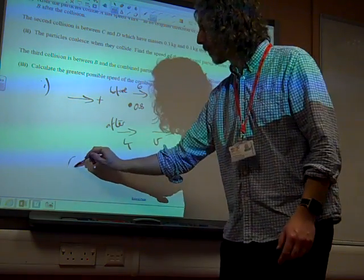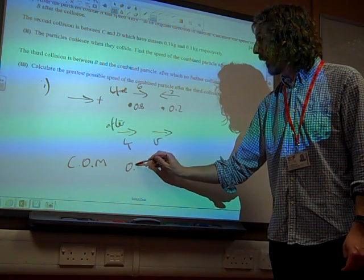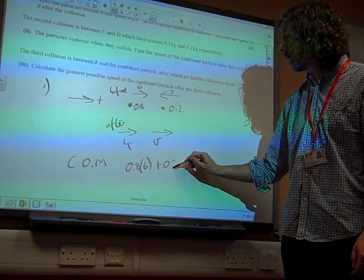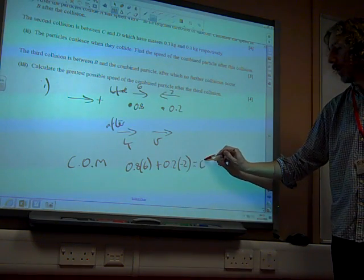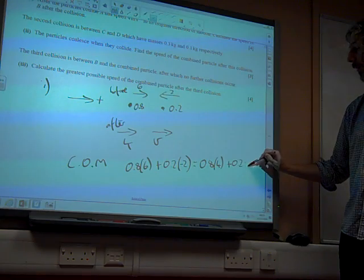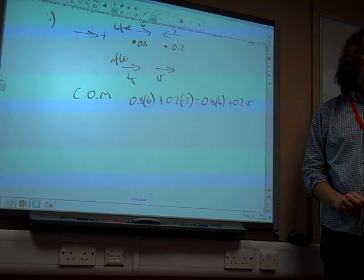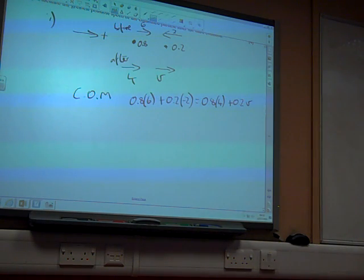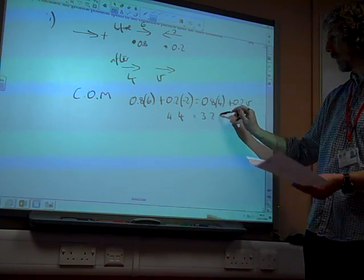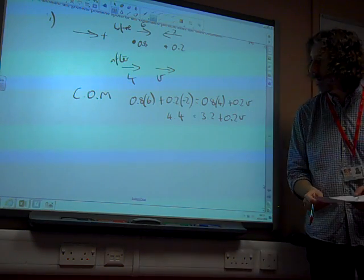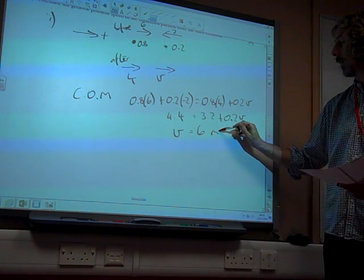Let's work this out. We're using conservation of momentum calculations. We're saying the total momentum before, that is 0.8 times 6 plus 0.2 times minus 2, is equal to the total momentum after, that is 0.8 times 4 plus 0.2 times V. There is my equation. No issues with any signs there. That left-hand side is 4.4, the right-hand side is 3.2 plus 0.2 times this velocity of B.